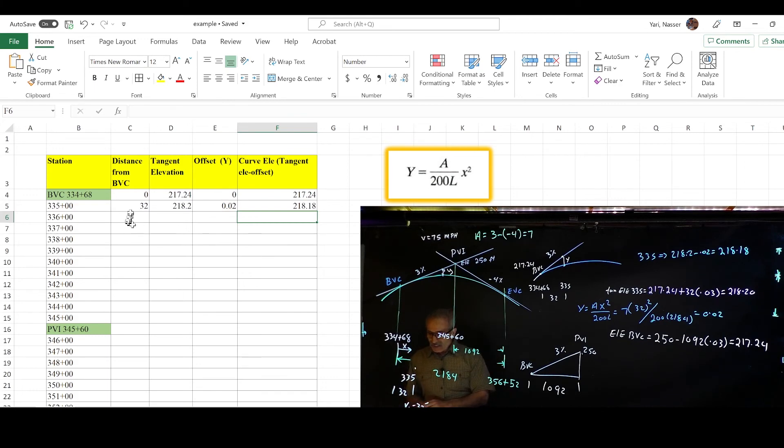Now remember here, this distance is very important. You got 32, the next one is 100 feet away, so I'm going to type in equal this cell plus 100, and type in enter, and I'm going to hold this corner and bring it down until I get to the middle.